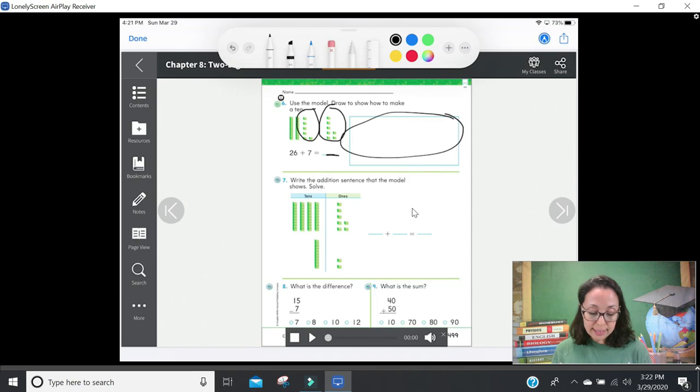Number seven says write the addition sentence that the model shows, solve. I saw a lot of different ways to do this in your homework, so I'm going to show you the best way that we are supposed to be doing it. What you want to do is take all the tens and ones from the first number, that's going to be your first number there. Then take all the tens and ones from the second number, that's going to be your second addend. Vas a coger todos las decenas y las unidades, el primer número de arriba va a ser tu primer número, los de abajo va a ser el segundo número. Once you have your two addends, make sure you add them up for your sum. Write the sum on the final line there.